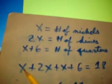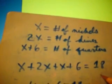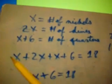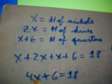Let's go down here. x plus 2x plus x plus 6 is going to be 18. Well, x plus 2x plus x equals 4x, right down here. 4x plus 6 equals 18.